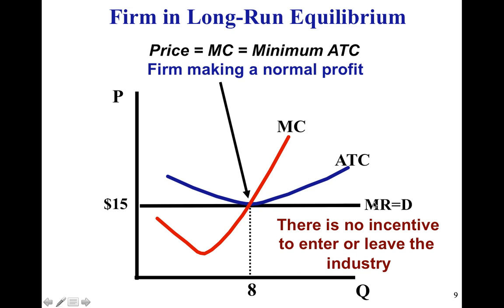The people who own and work for these businesses are leading a normal life. An easy way to think about normal profit: they're not in the poorhouse, but they're not raking in cash hand over fist. No one's looking over their fence at these corn farmers saying 'wow, they've got it so good, I'm going to switch to planting corn instead of wheat,' and vice versa.